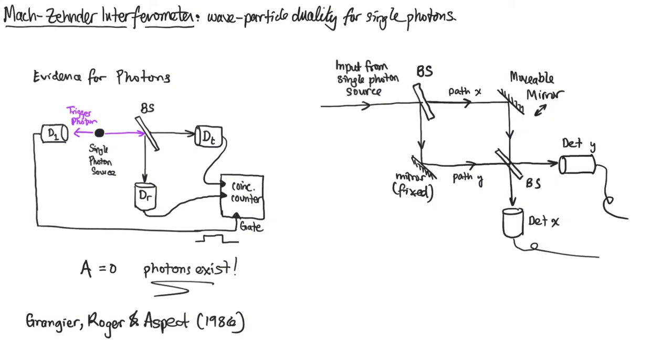Now notice the important aspect here. Let's say detector X fires. Well, what does that mean? Does that mean the photon took path X? Well, no, not necessarily. It could have taken path X by transmitting through the first beam splitter and transmitting through the second. But it could also have reflected off the first and reflected off the second. So either you get two transmissions or two reflections. That takes you to detector X.